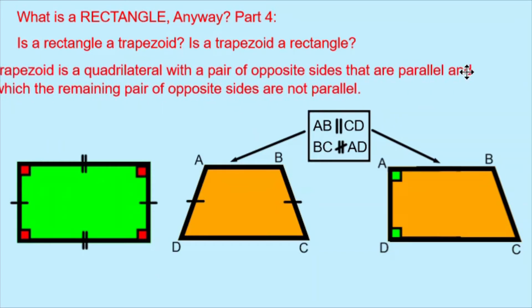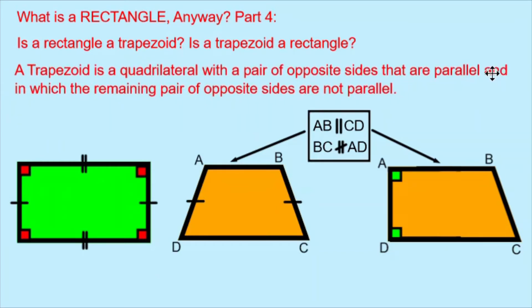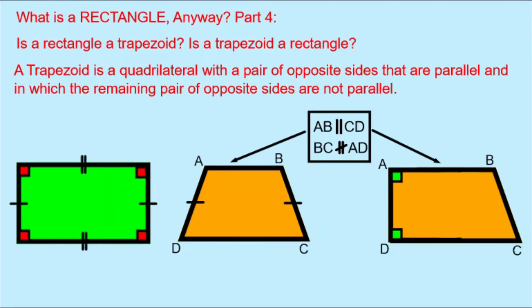Let's look at the definition of a trapezoid first. A trapezoid is a quadrilateral with a pair of opposite sides that are parallel, and in which the remaining pair of opposite sides are not parallel. Warning, this is the exclusive definition of a trapezoid, which is the definition that is used in the curriculum within which I teach. But there is also an inclusive definition of a trapezoid, which is used in some school curriculums.